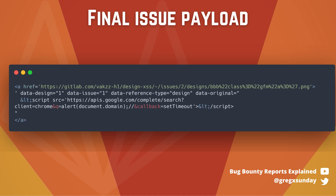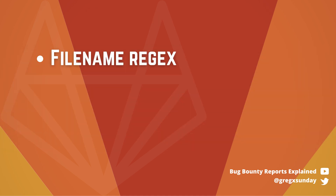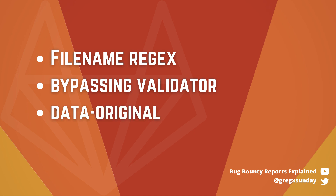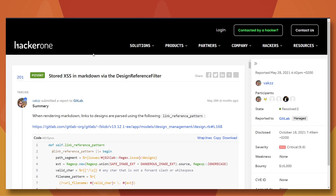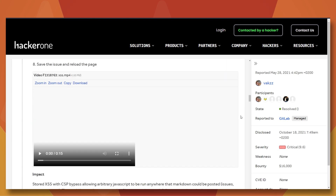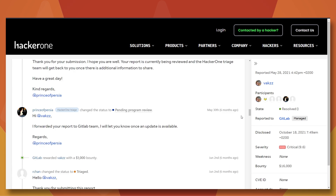It's crazy how many things had to align for this to be possible: the regular expression for the filename, then bypassing the validator using the data-original attribute, and finally bypassing the CSP. But the best thing is that it's not even the end, because William escalated this XSS even further — five days later he submitted another comment in the report.